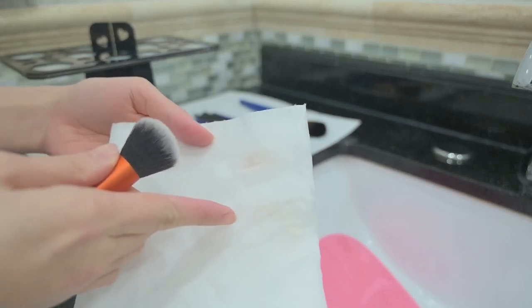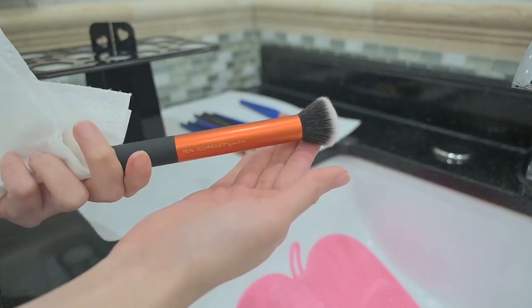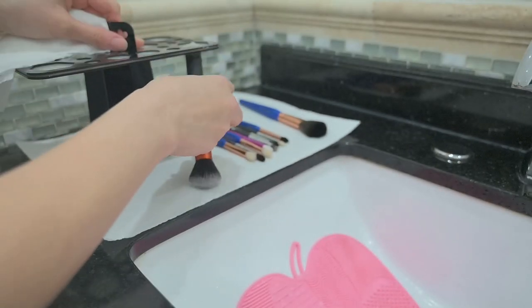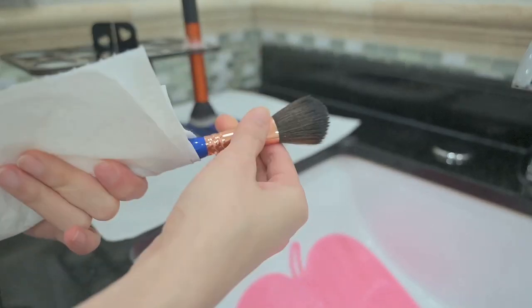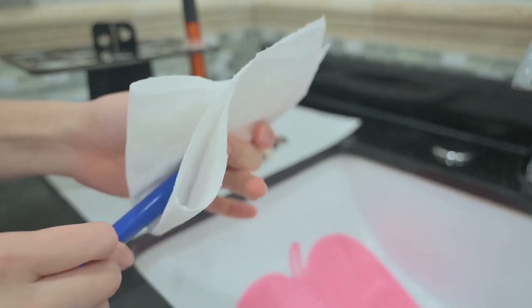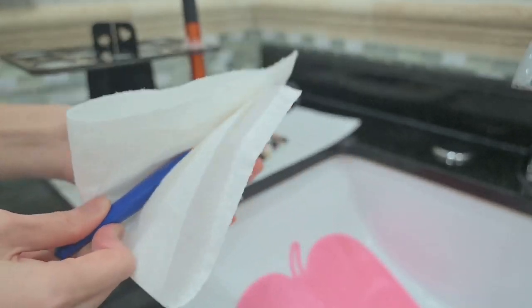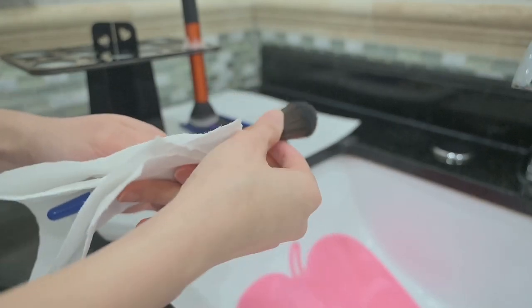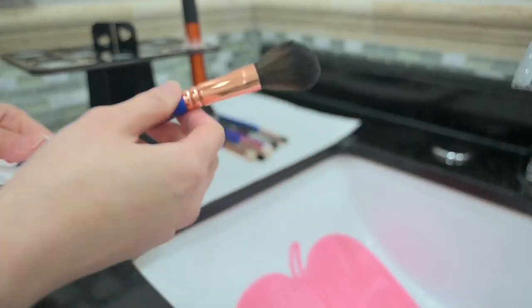Look at this, really gross right? So don't skip this step the next time you clean your brushes. Then I reshape the brush if needed and hang it on for air dry. You can also lay them flat on a clean dry towel or cloth with the bristles hanging slightly off the edge of the towel. This will allow air to circulate around the bristles and help them dry more quickly.